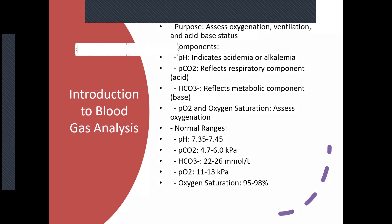pH indicates whether the patient is acidic or alkalotic — whether they're in acidemia or alkalemia. The normal range for pH is 7.35 to 7.45. Anything below 7.35 is regarded as acidotic; above 7.45 is regarded as alkalotic. A pH of 6.7 or less is not compatible with life, so you want to bring your patient as close to homeostasis as possible.